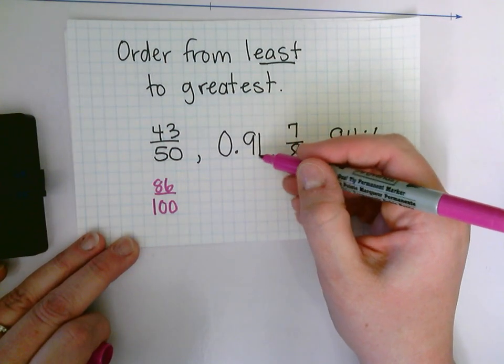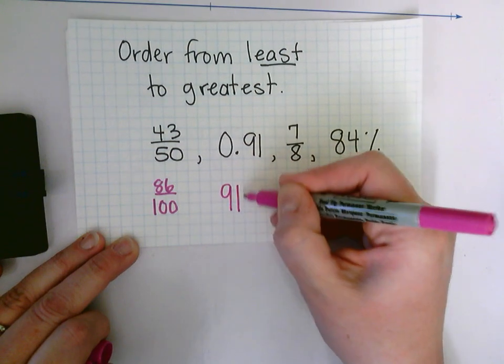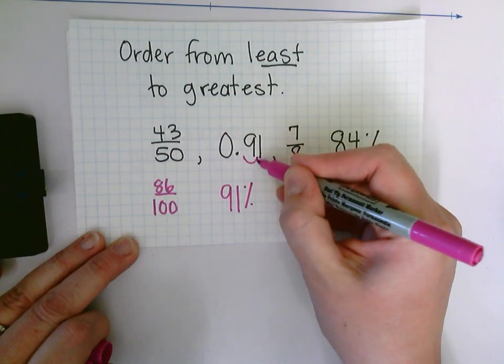I have 91/100, so that is going to be the same as 91% when I move my decimal two jumps to the right.